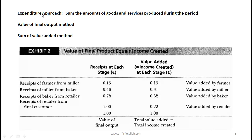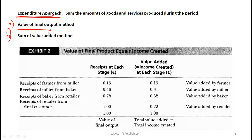From an exam perspective, you need to be able to calculate GDP given some basic information. Let's talk about the expenditure approach — simply the sum of goods and services produced during the period. Under the expenditure approach there are two methods: Method A is to look at the value of the final goods produced, called the value of final output method. Method B is to look at the sum of value added at each stage.